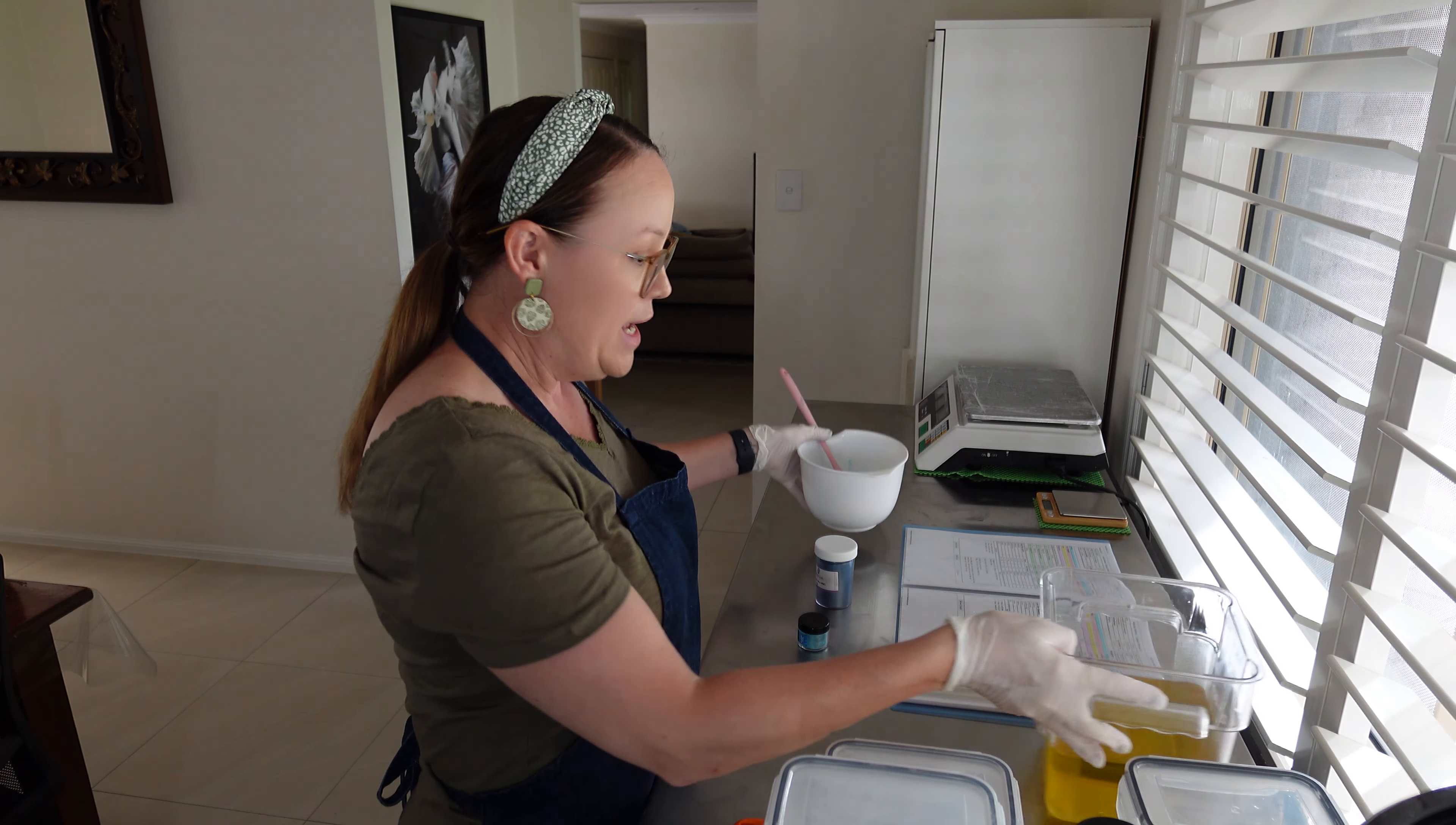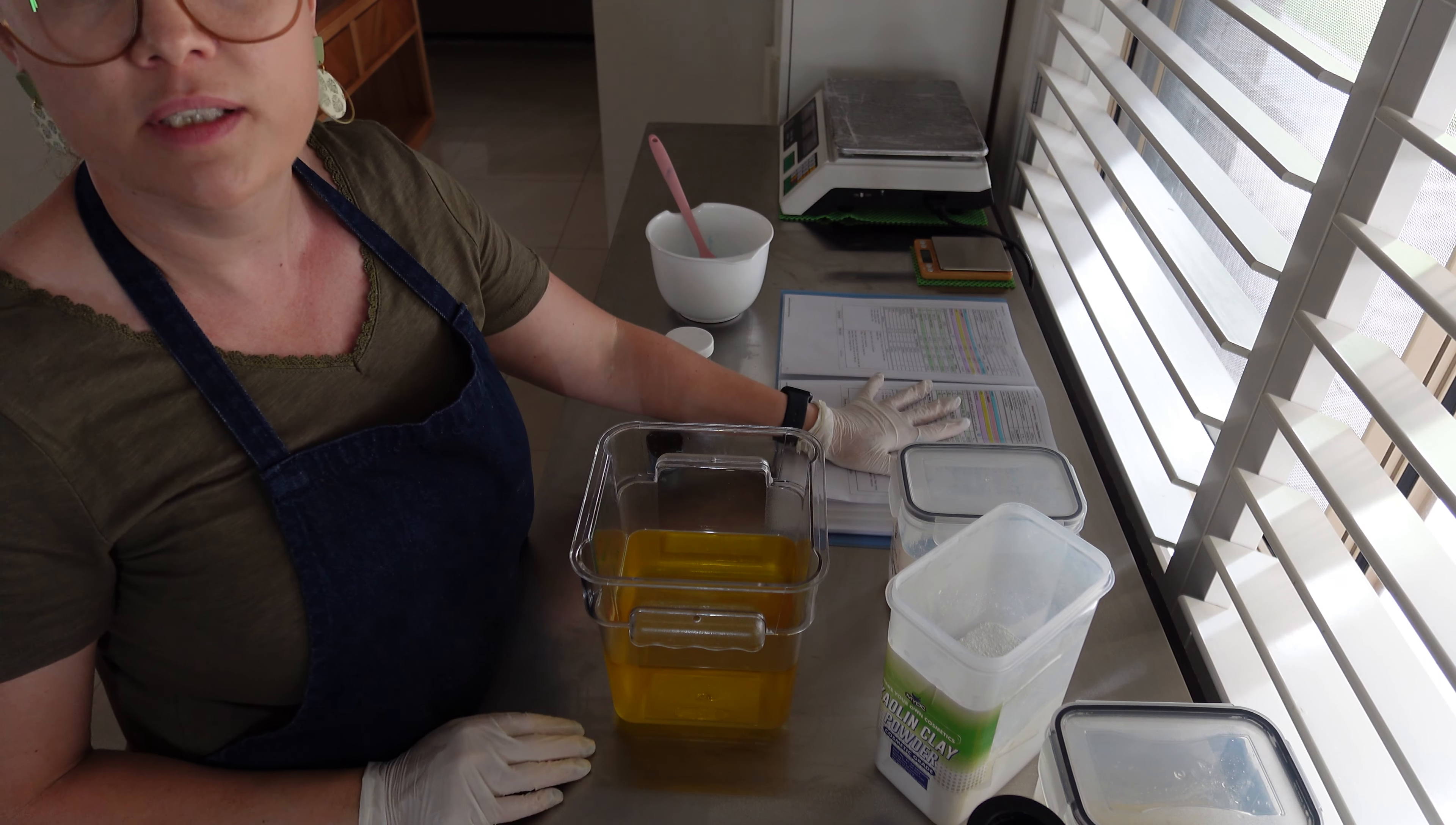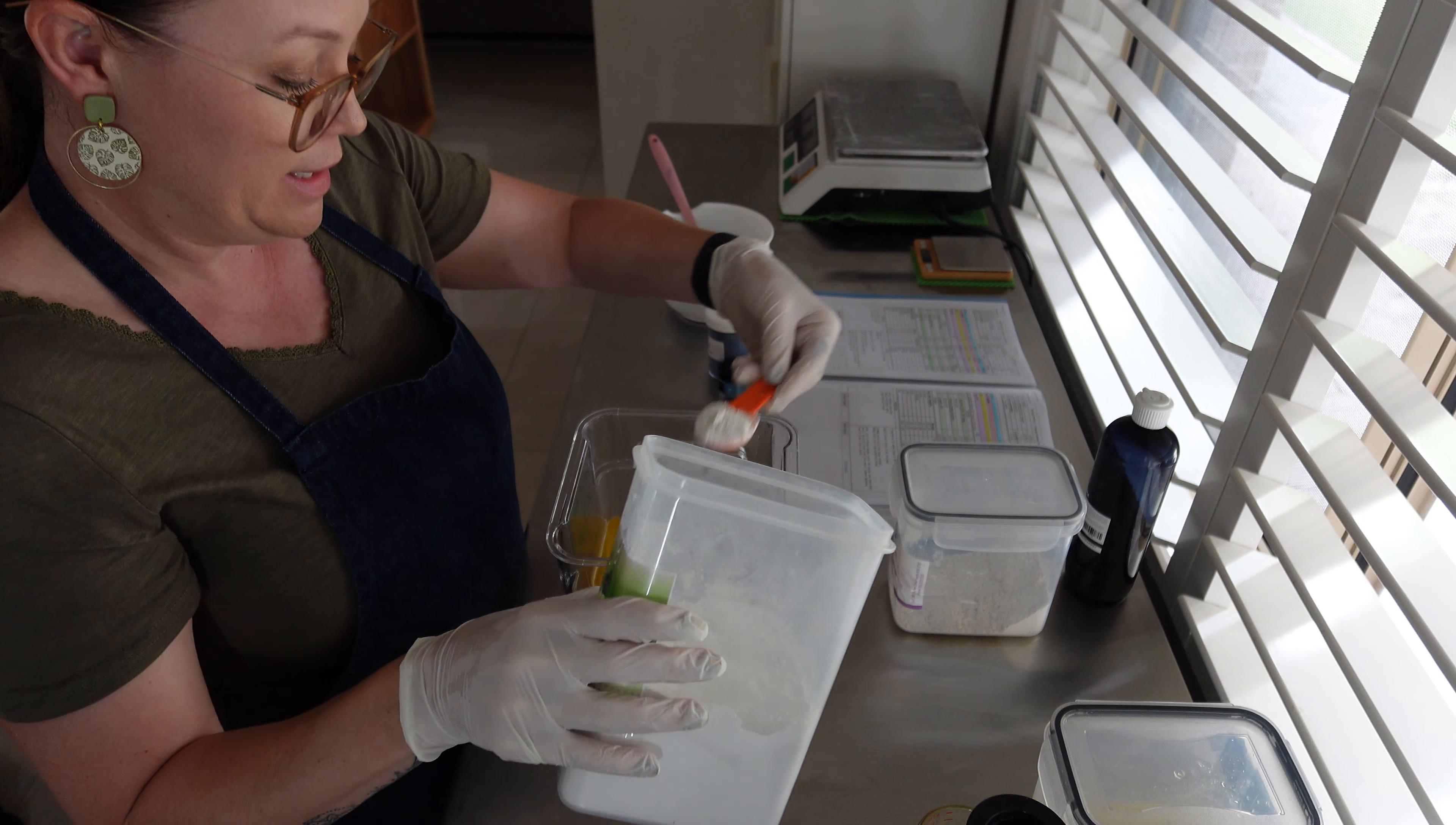The first thing I'm going to do is mix through my colloidal oats and kaolin clay into my oils. My notes here off to the side with my recipe along with my design idea. Let's add in our tablespoon of kaolin clay.